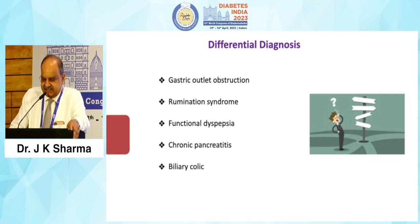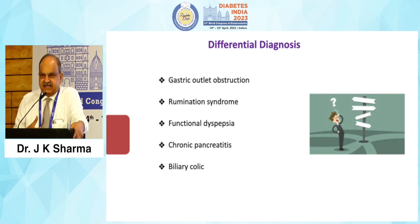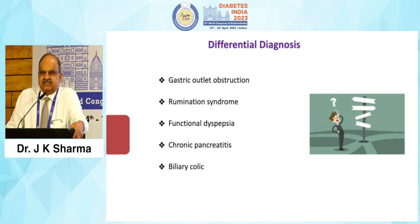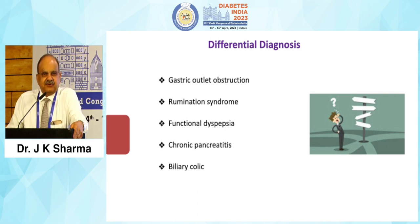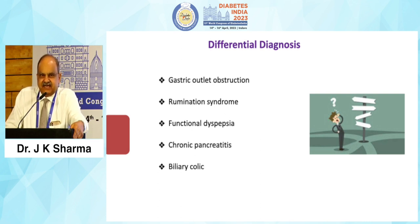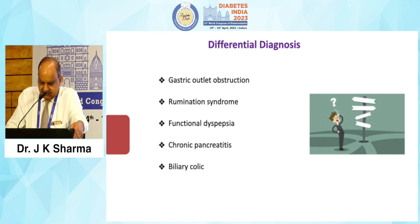We must look for differential diagnoses — whether the patient has gastric outlet obstruction or rumination syndrome. In rumination syndrome, the patient regurgitates semi-digested food from the stomach back into the mouth and begins chewing again. There may also be functional dyspepsia — many gastroenterologists simply prescribe anti-anxiety drugs to these patients without looking for the underlying cause. We also need to differentiate from chronic pancreatitis and biliary colic.